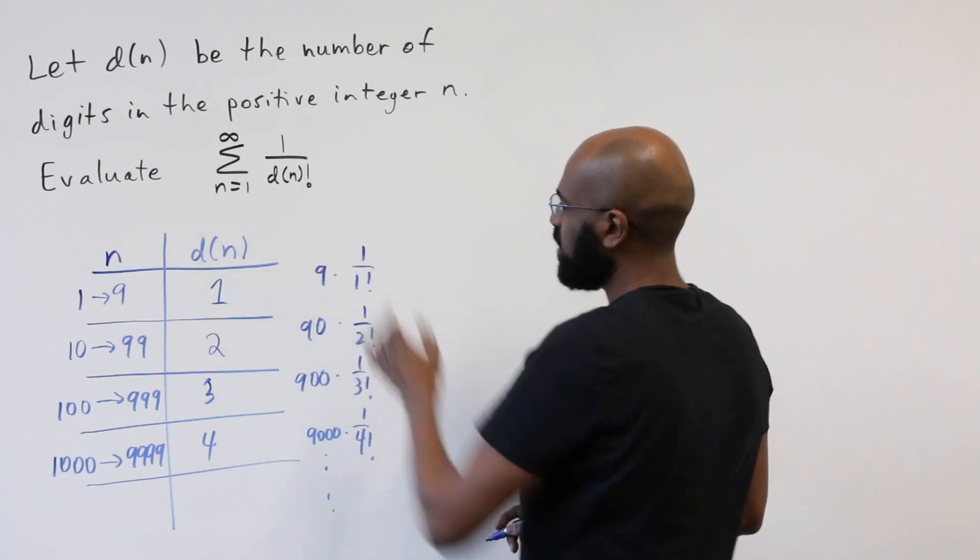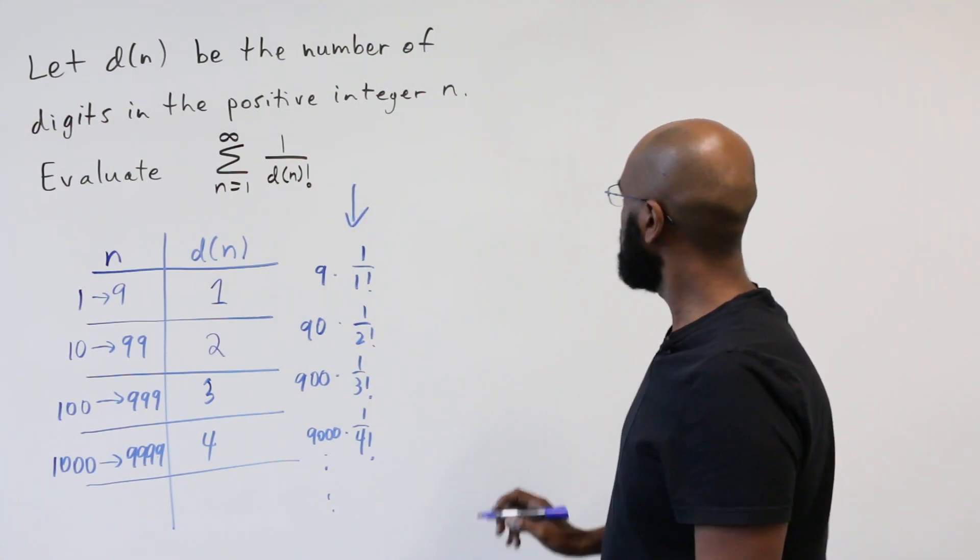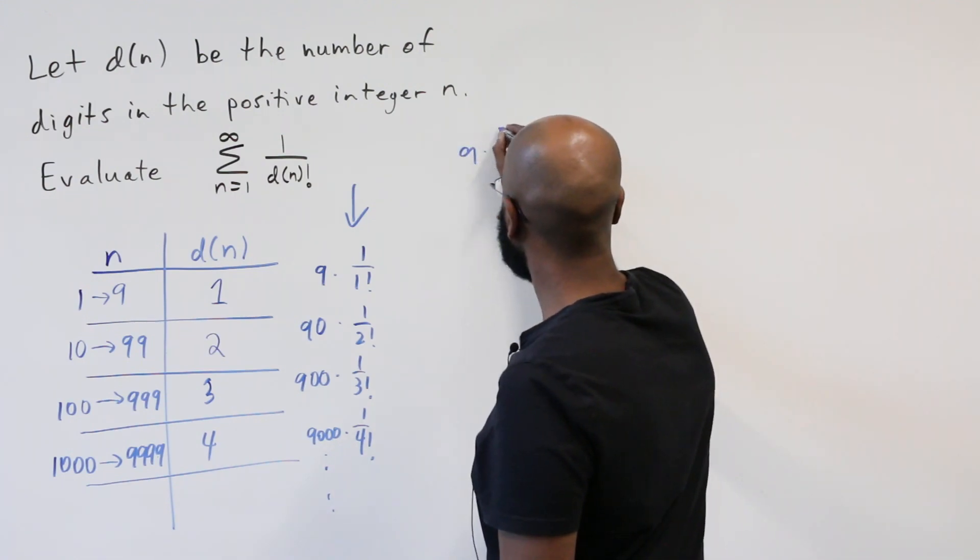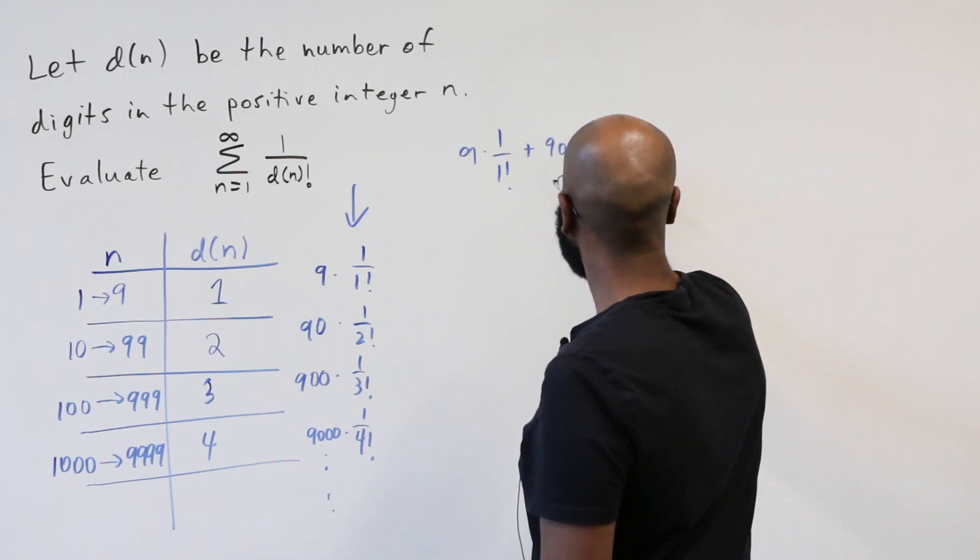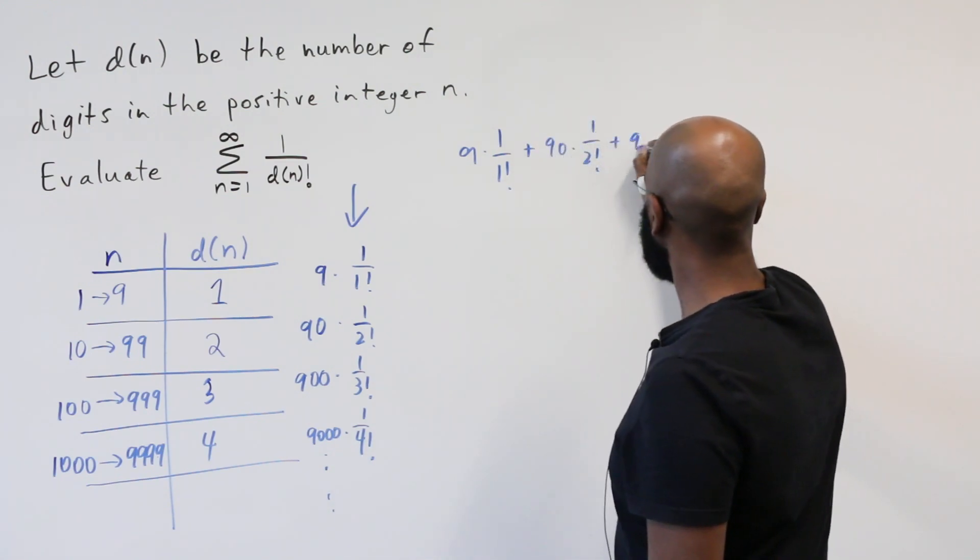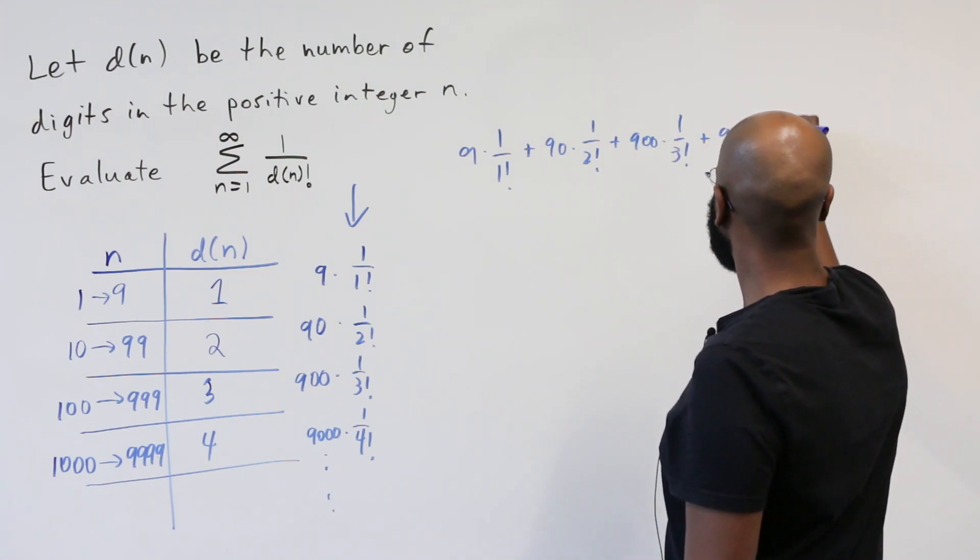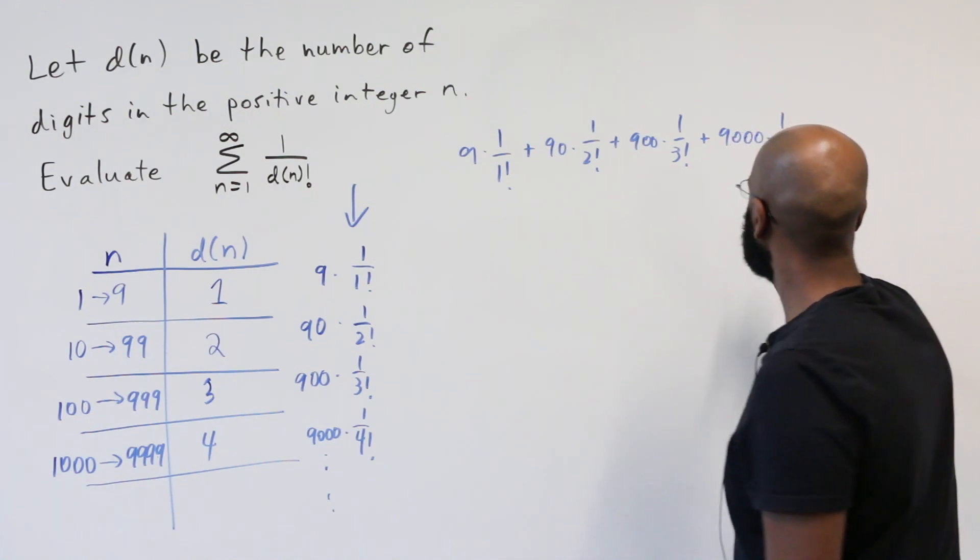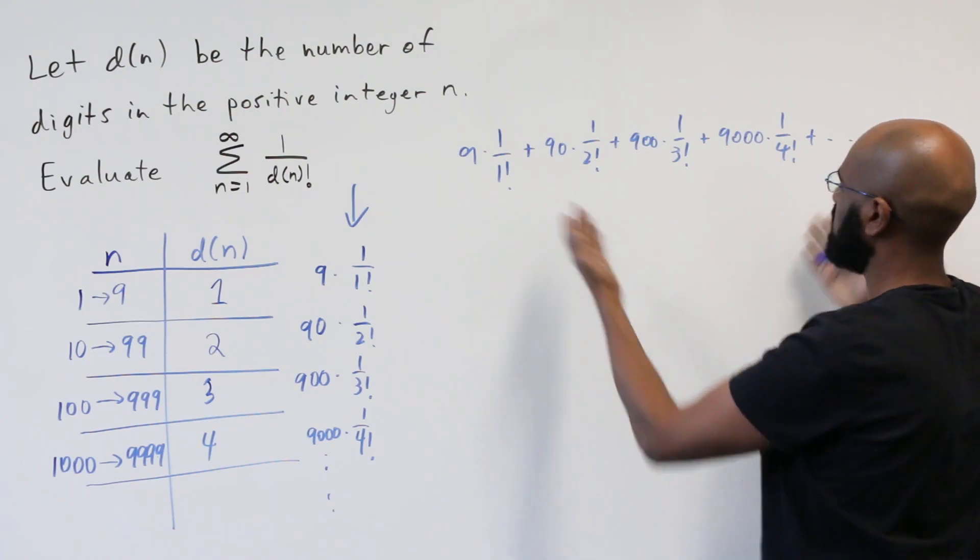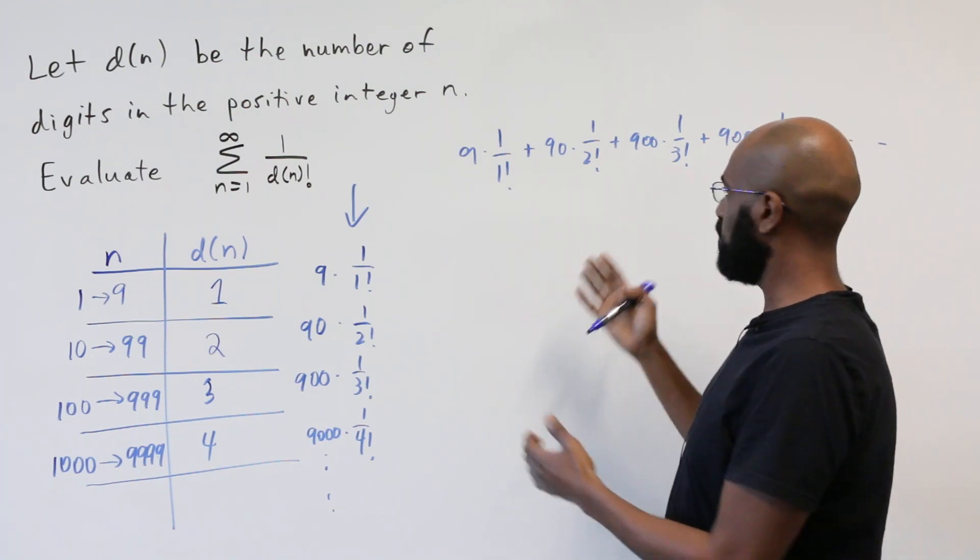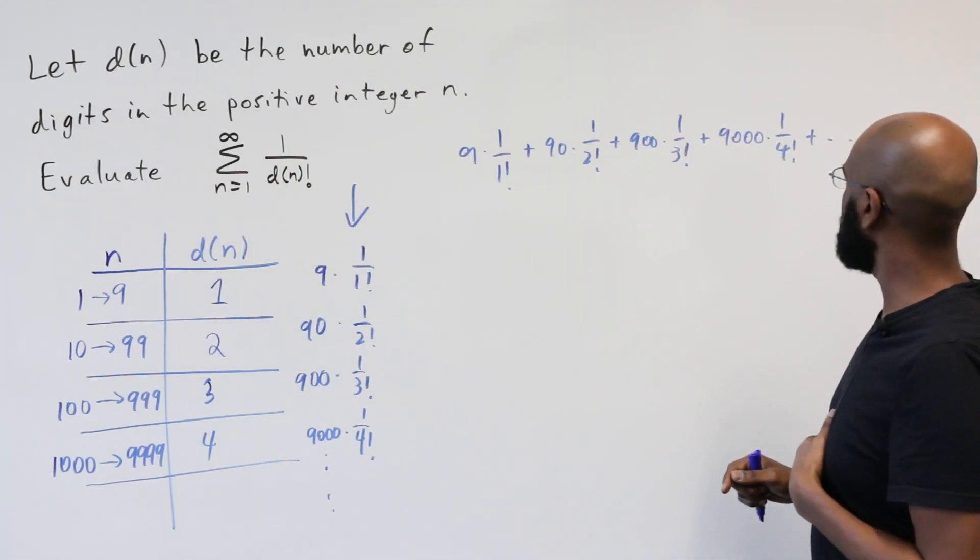So this sum can be rewritten as the sum of all the things that we see along this column right here. So I'll write that out over here. It's 9 times 1 over 1 factorial, plus 90 times 1 over 2 factorial, plus 900 times 1 over 3 factorial, plus 9,000 times 1 over 4 factorial, etc. All right, so let's find a way to simplify this expression and maybe work toward getting an explicit expression for what this sum that we want to evaluate is.